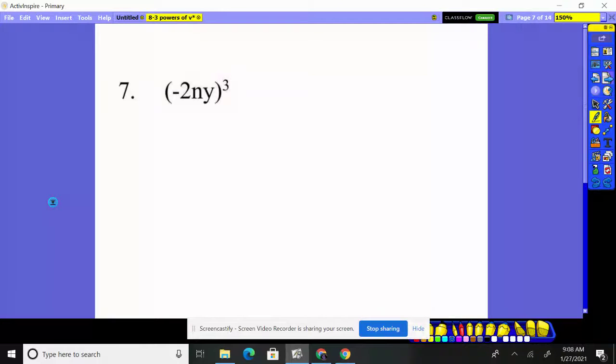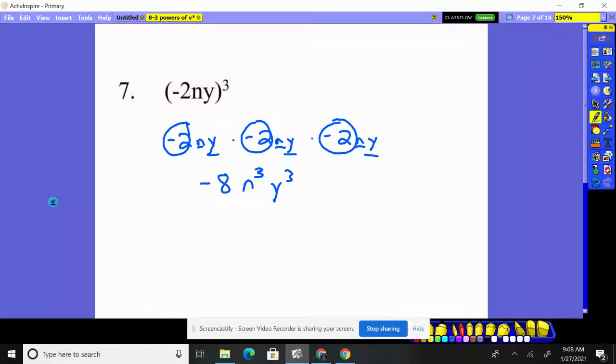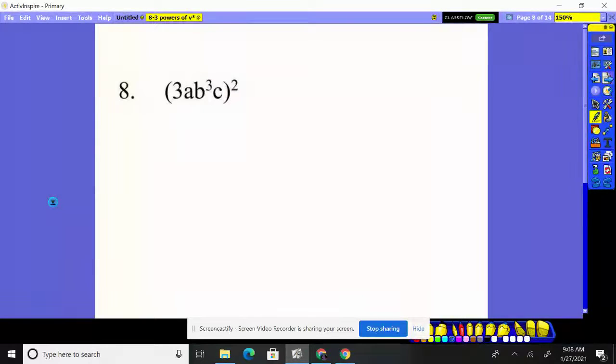Negative two n y cubed. So I've got to do negative two n y times another one, times another one. Okay. Well, negative two times negative two is positive four. Times negative two is negative eight. N times n times n is n cubed. And y times y times y is y cubed. Nice and simple if you write it out and think what it's saying.